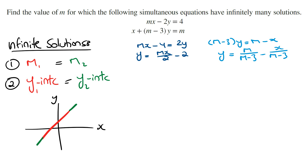For these two lines to have infinitely many solutions, their gradients must be the same. Equating the coefficients of the x term for each equation, we get m over 2 is equal to negative 1 over (m minus 3). To get rid of the denominators, we can multiply both sides by 2 and by (m minus 3), giving us m times (m minus 3) is equal to negative 2.